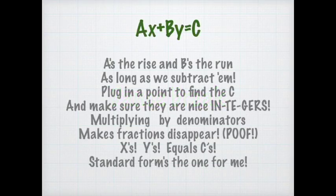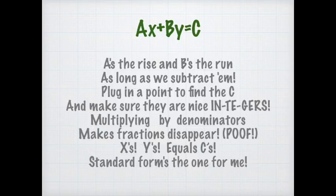A's the rise and B's the run, as long as we subtract them. Plug in a point to find the C, and make sure they are nice integers. Multiplying by denominators makes fractions disappear. Poof — x's, y's, equals C. Standard form's the one for me.